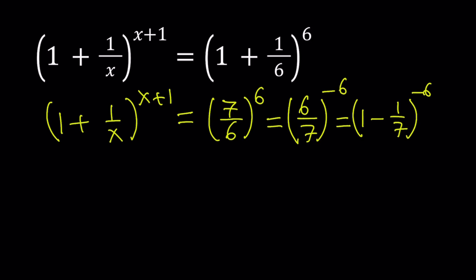But I can do the following. Look. I can just write the 6 over 7 as 1 minus 1 over 7 because it's less than 1. That is to the power of negative 6. And now we have the negative 7.